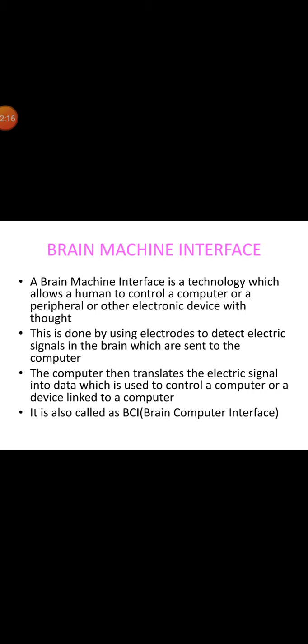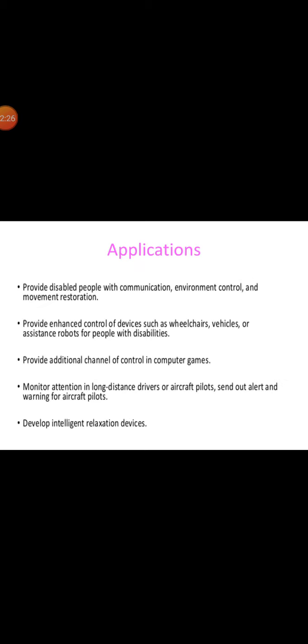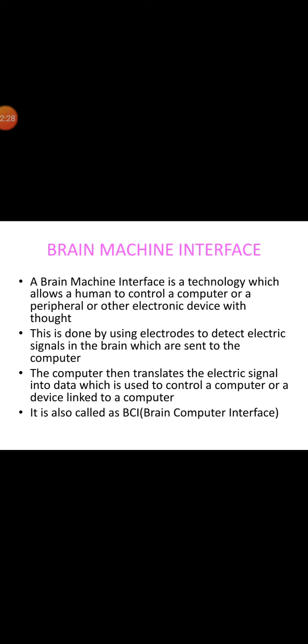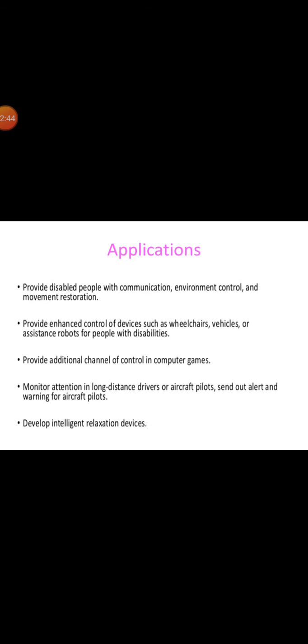Brain machine interface can be defined as a technology which allows a human to control a computer or a peripheral or other electronic devices with thought. This is done by using electrodes to detect the electric signals in the brain which are sent to the computer. The computer then translates the electrical signal into data which is used to control a computer or a device linked to computer. It is also called BCI or Brain Computer Interface.